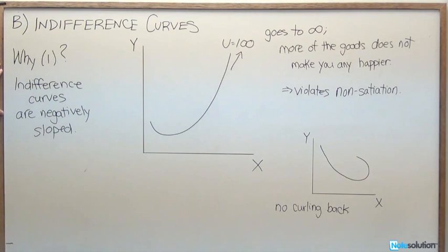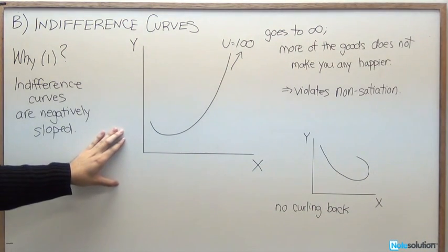Why exactly do we have property 1? That's to say, indifference curves are negatively sloped. Well, what I've given you here is a counter example.